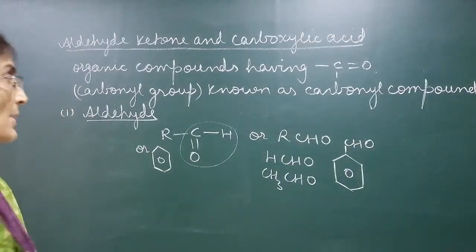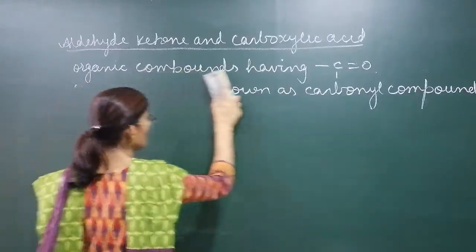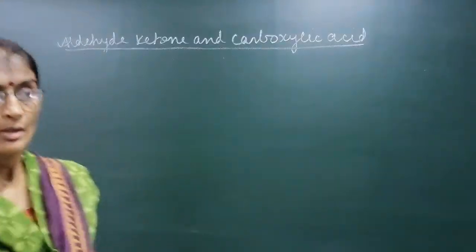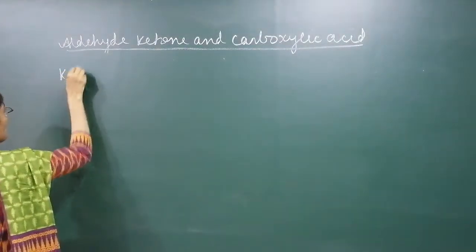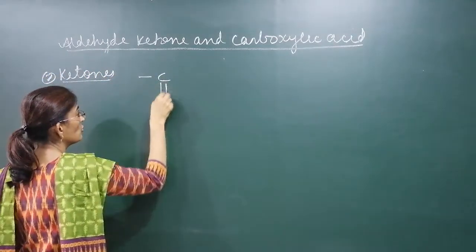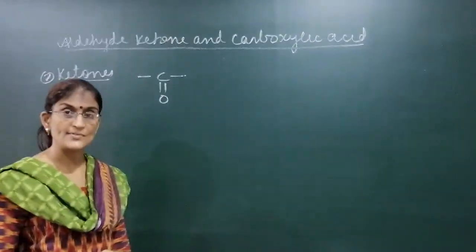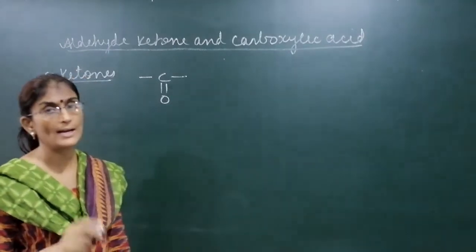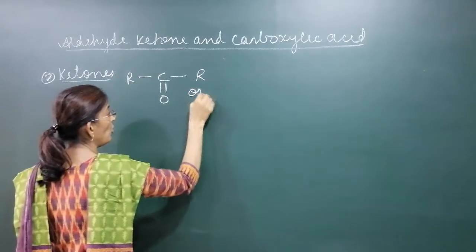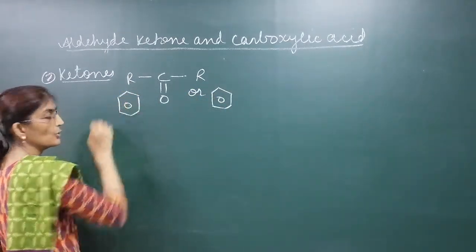The second type of carbonyl compounds are ketones. In ketones, we have a carbonyl group C=O, and the other two valencies are satisfied by either alkyl or aryl groups. Both valencies are satisfied by alkyl or aryl groups — then the compound is known as a ketone.